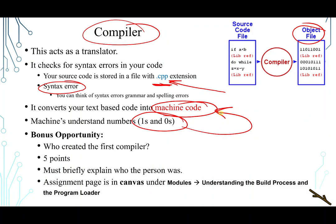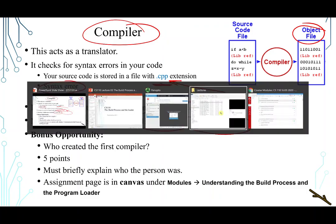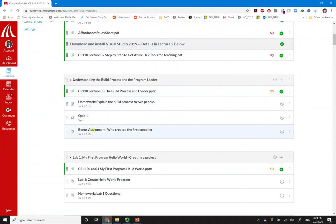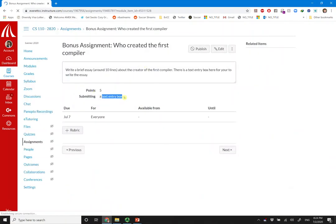Here is a bonus opportunity. Answer who created the first compiler. And this is five points. So you must briefly explain who the person was. And you can write this, your answer, in the assignment page in Canvas. You can find it under modules. The module name is understanding the build process and the program loader. So if I go to modules on your Canvas, this is where you should write your answer. So you click on this one. Then a text entry box is going to show up for you when you hit submit assignment.